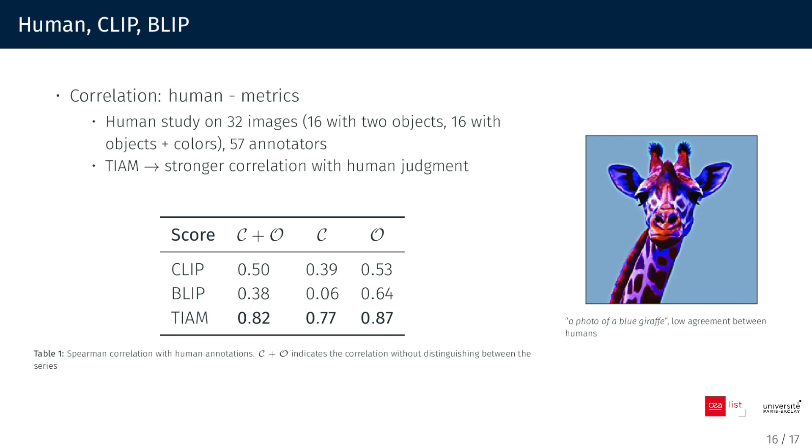It is important to highlight that defining whether the color is correctly bound is a challenging task. For instance, in these pictures, there is low agreement among annotators. It is difficult to say if the giraffe is blue or purple or something between.